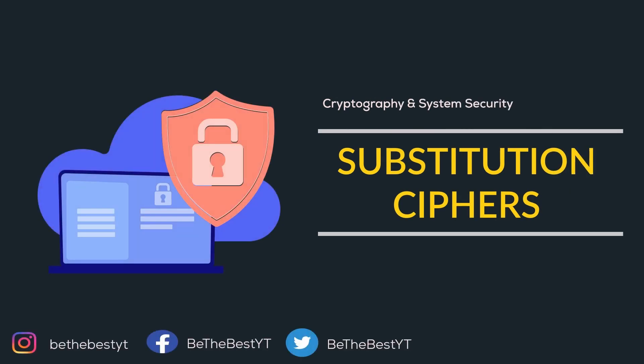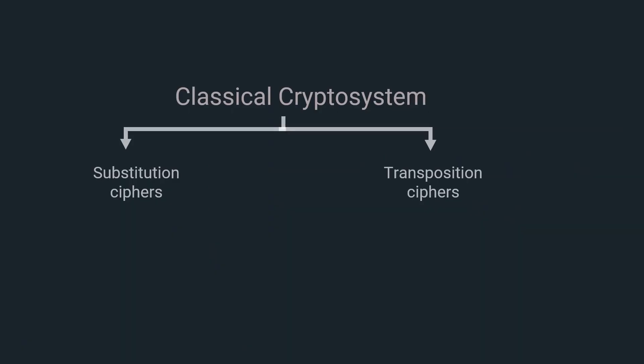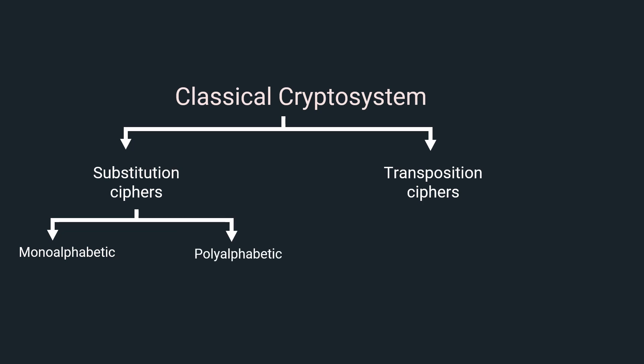Hi all, welcome back to our YouTube channel. The topic of the video is substitution ciphers. In the last video, we learned that classical cryptosystems are categorized into two categories: substitution ciphers and transposition ciphers. Substitution ciphers are further classified into two types: monoalphabetic ciphers and polyalphabetic ciphers. In this video, we are going to cover substitution ciphers in detail.